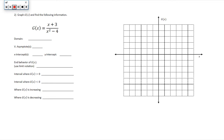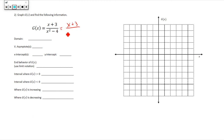This is a rational function — a polynomial divided by another polynomial, as long as the polynomial on the bottom is not zero. The first step is to simplify. x plus 3 in the numerator doesn't simplify, but the denominator factors as a difference of perfect squares: (x minus 2)(x plus 2). Nothing cancels, which means x cannot equal 2 or negative 2.